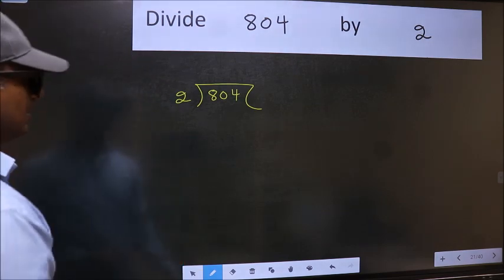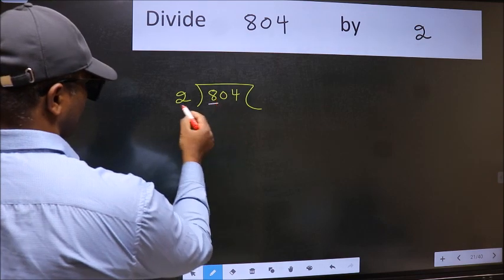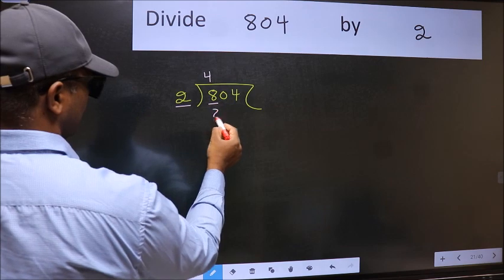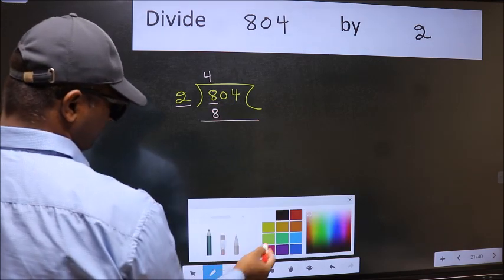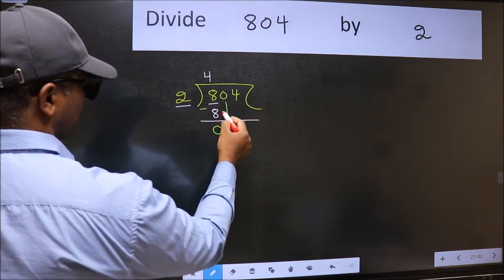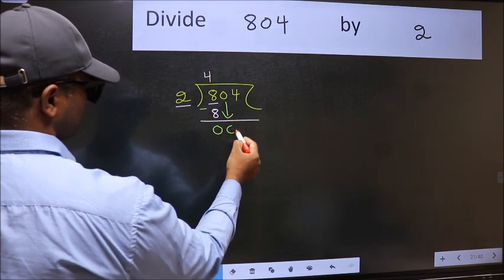Next, here we have 8 and here 2. When do we get 8 in 2 table? 2 4s 8. Now we should subtract. We get 0. After this, bring down the beside number. So 0 down.